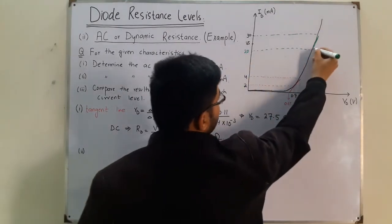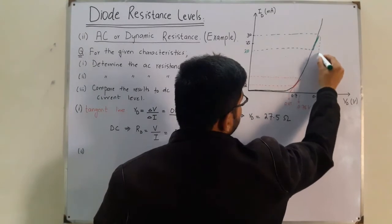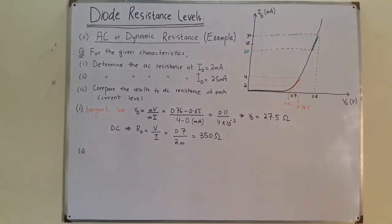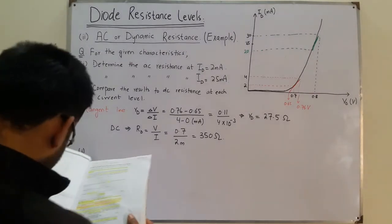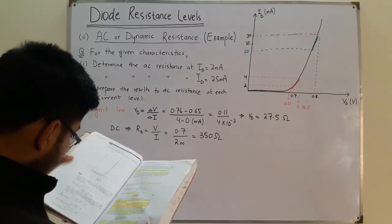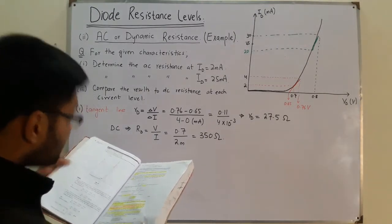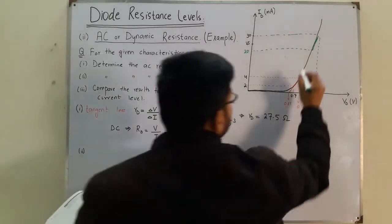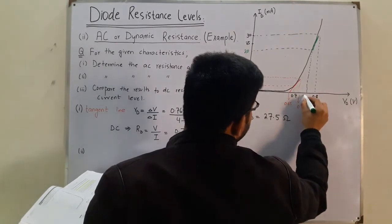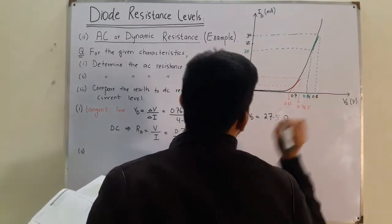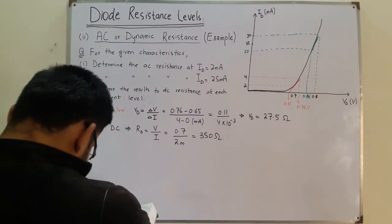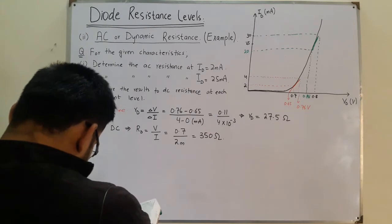From the book, at ID equal to 30 the voltage VD is equal to 0.8 volts, and at ID equal to 20 the voltage is 0.78 volts. The required point is at 25 milliampere.